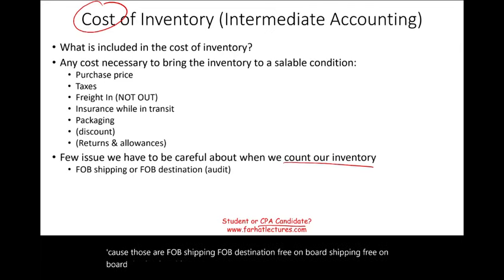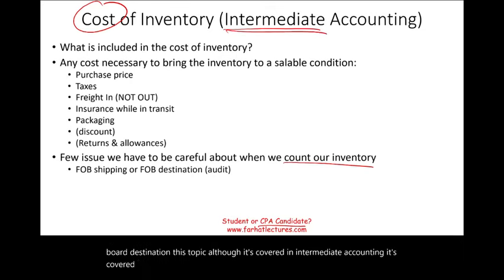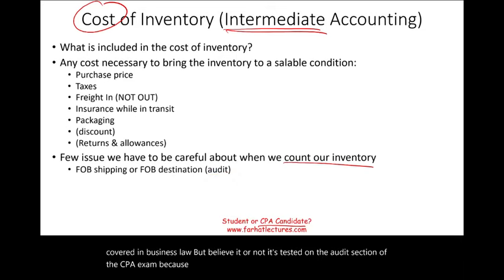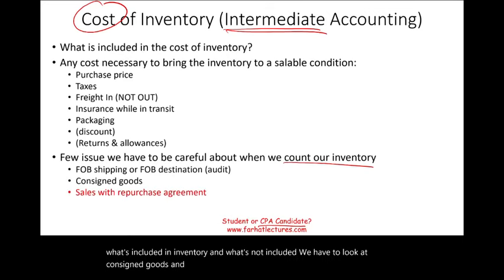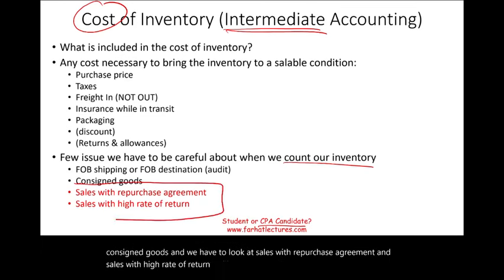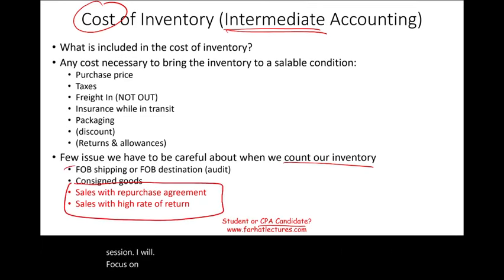FOB shipping and FOB destination — although covered in intermediate accounting, this topic is also covered in business law. It's tested on the audit section of the CPA exam because they might give you a simulation asking what's included in inventory and what's not. We have to look at consigned goods, and sales with repurchase agreement and sales with high rate of return. I will keep those two for the next session and focus here on FOB shipping, FOB destination, and briefly cover consigned goods.